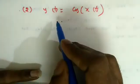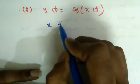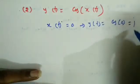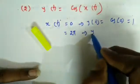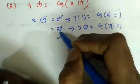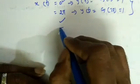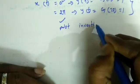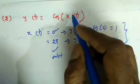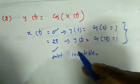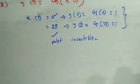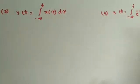Next question: y(t) = cos(x(t)). First check if it's invertible. If x(t) = 0, then y(t) = cos(0) = 1. If x(t) = 2π, then y(t) = cos(2π) = 1 again. Two distinct inputs give the same output, so it is NOT invertible. We can easily identify that whenever we see cos of something, inputs like 0, 2π, 4π, etc., all give the same output. Therefore this is not an invertible system.